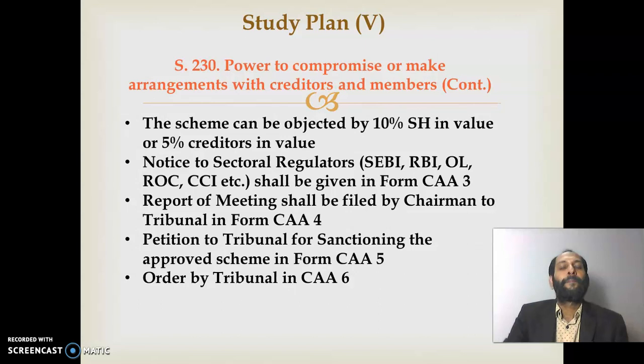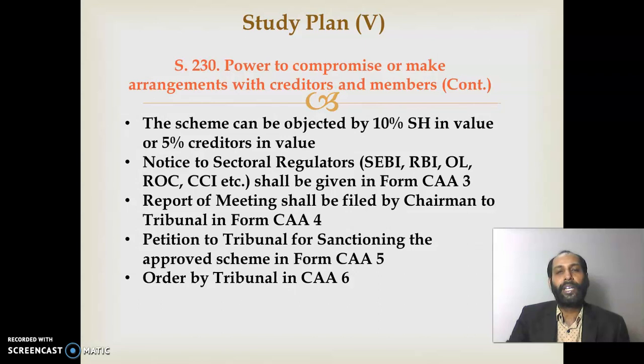The scheme can be objected to by 10% of shareholders in value or 5% of creditors in value; if objected, a different procedure applies. Along with the notice to shareholders and the public notice, you must give notice to the sectoral regulators — such as SEBI (for listed companies), RBI (for banks), the Official Liquidator, the Registrar of Companies, and the Competition Commission of India. These are called sectoral regulators, and that notice should be in Form CA3. Once the meeting concludes positively, the report or minutes of the meeting should be prepared by the chairman and filed in Form CA4.